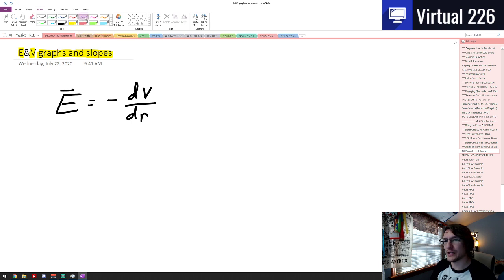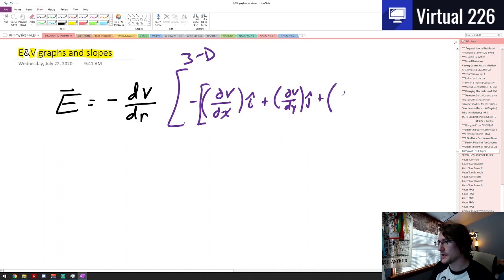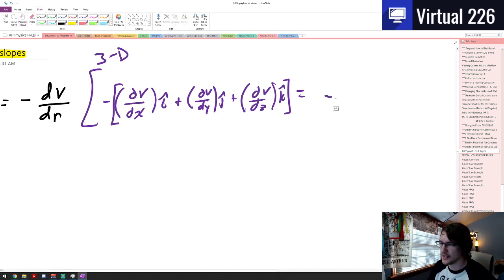If you wanted to write this in 3D, this would actually be the negative of the quantity and then you need partial derivatives, which you'll see when you get further in calculus. A partial derivative of the voltage with respect to an x-coordinate in the i-hat direction, plus the partial derivative in the y-direction in the j-hat coordinate, plus the partial derivative of the voltage in the z-k-hat coordinate. This can also be thought of as just taking a gradient vector. This is the negative of the gradient of the voltage.